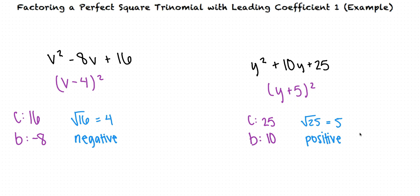This method for factoring perfect square trinomials with leading coefficients of 1 is similar to the method for factoring other quadratics with leading coefficients of 1. But our answers can be written slightly differently due to the special properties of perfect square trinomials.